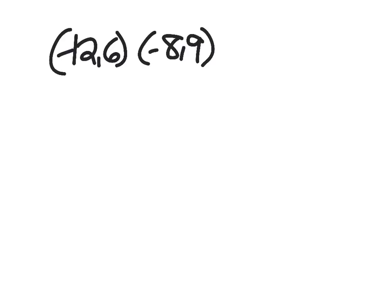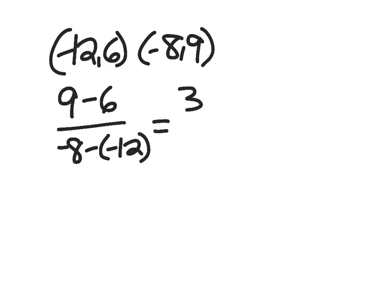Remember in class we talked about that you need two points to make a line. So I'm going to start out by finding my slope. So I have y minus y over x minus x. So this would be 3 over negative 8 plus 12 would be positive 4. So I have a slope of 3 fourths.